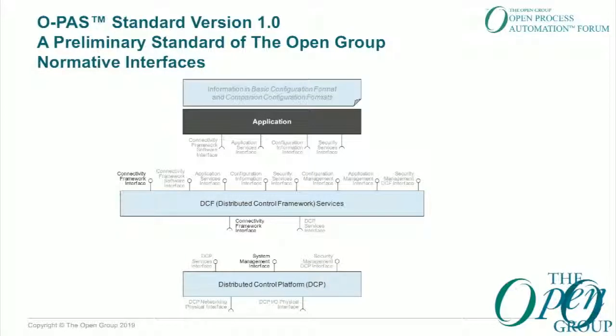For normative interfaces, this view goes from the Distributed Control Platform up through the Distributed Control Framework, where the horizontal control bus data resides and connectivity through applications. Everything in bold is part of this standard — the system management interface, the connectivity framework interface, and both north and south across that control bus. This initial interoperability standard allows two proprietary devices to reside on the same control network and communicate with each other, which today you cannot do in a conformant or standard way without a heavy lift. In future releases of the standard, everything that's grayed out will become part of future interface revisions.